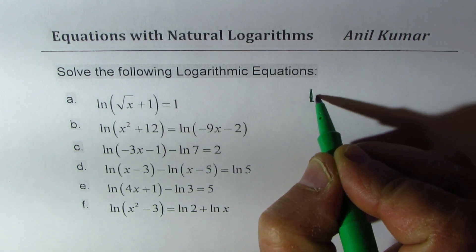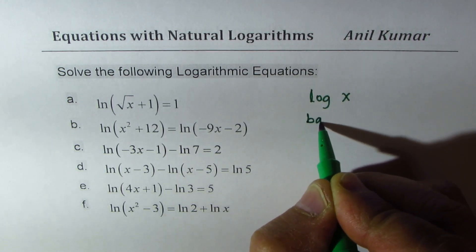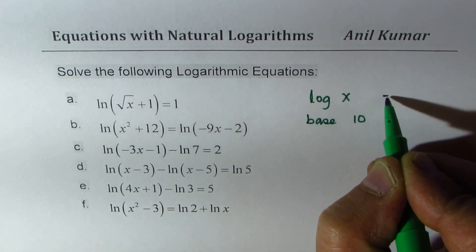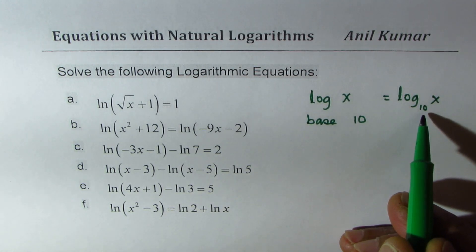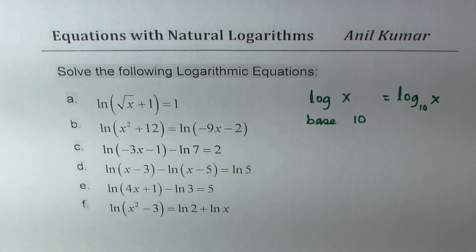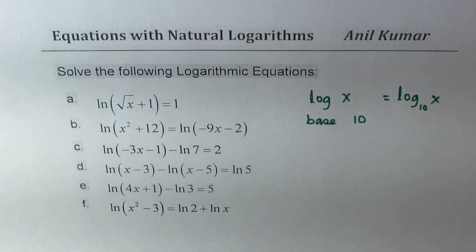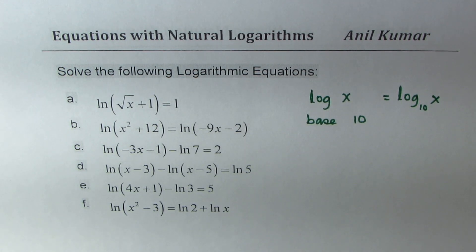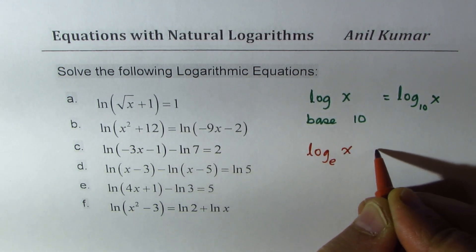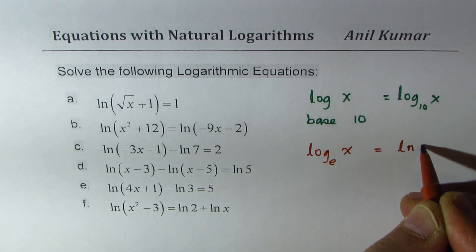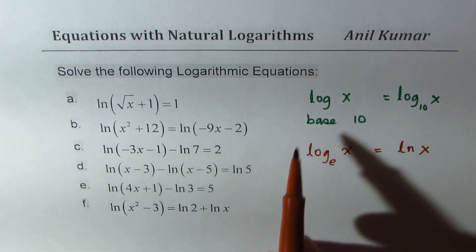Now you know logarithms. If I write log of x, it means the base is 10 — same as log to the base 10 of x. Normally we do not write the base 10, and on a calculator you will find the key log of x. Natural log has a similar status. On your calculator you will find ln, which is natural log. So if I have logarithms to the base of e, then we call them natural log and they are written as ln x.